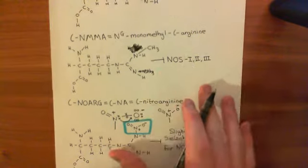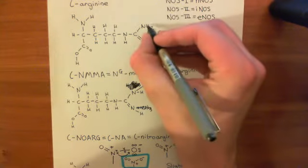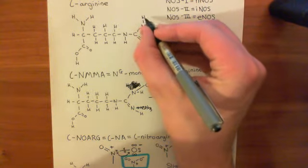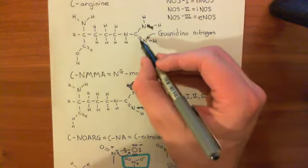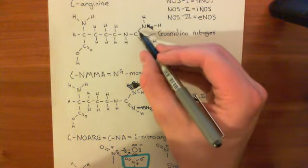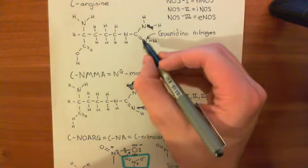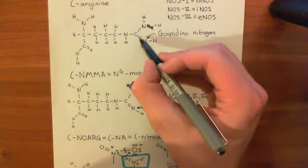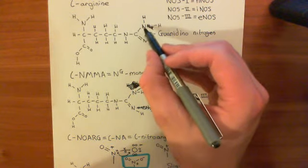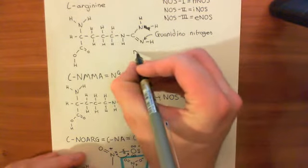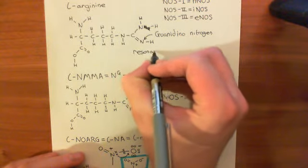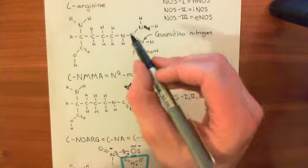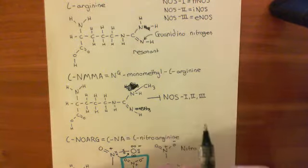So in the structure of arginine, let's look at the structure up here. What often happens is that this double bond will oscillate between being a double bond with this nitrogen and being a single bond with this nitrogen, and then a single bond with this nitrogen and a double bond with this nitrogen. So there's an oscillation between whether this double bond is between this carbon and this nitrogen or this carbon and this nitrogen. That's known as a resonant structure.